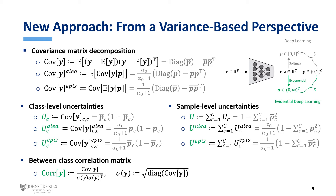So here we propose an alternative approach to quantify evidential uncertainties. We derive the uncertainty of each class as the variance of that particular class variable, which can be retrieved from the diagonal of the covariance matrix. We first compute the covariance matrix of Y, which is a C-by-C matrix where C is the number of classes. We then decompose this covariance matrix into aleatoric and epistemic covariance by the law of total covariance. The class-level uncertainties can be obtained from the diagonal elements of the corresponding covariance matrix.